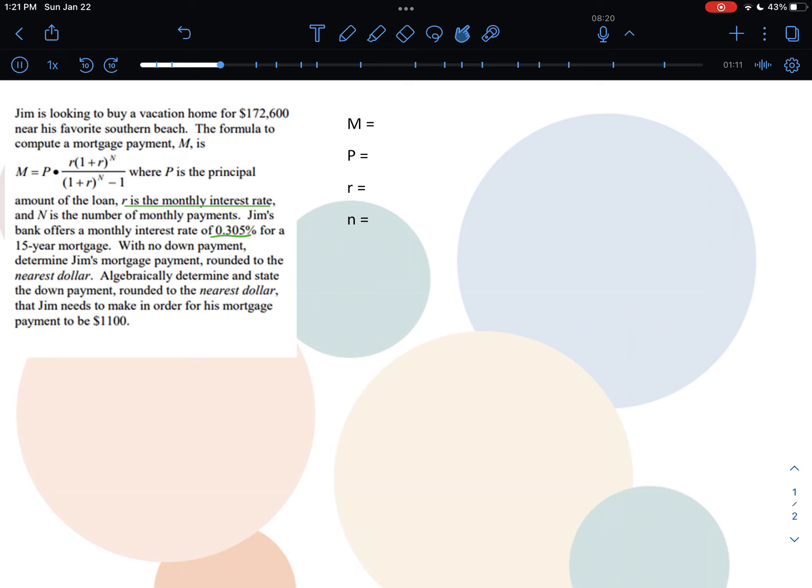A few things going on here, but it looks like the first thing that I'm going to have to find is Jim's mortgage payment rounded to the nearest dollar. And then I'm going to be using that to find the down payment he's going to have to make to come up with an $1,100 monthly payment. So I think the first thing I need to do is find out my variables that I have and start writing them out. Initially, it looks like I'm trying to find M, the mortgage payment.